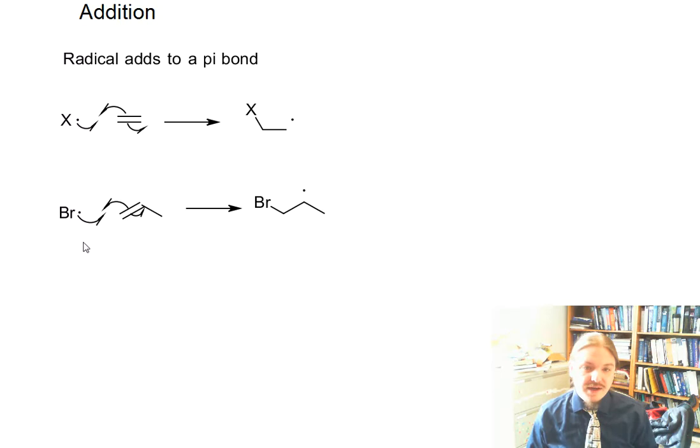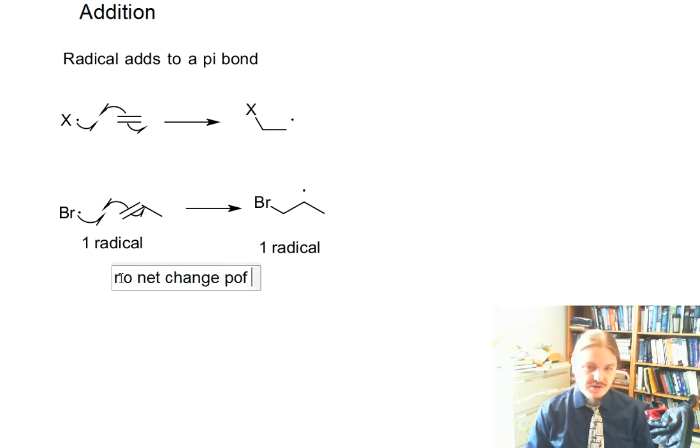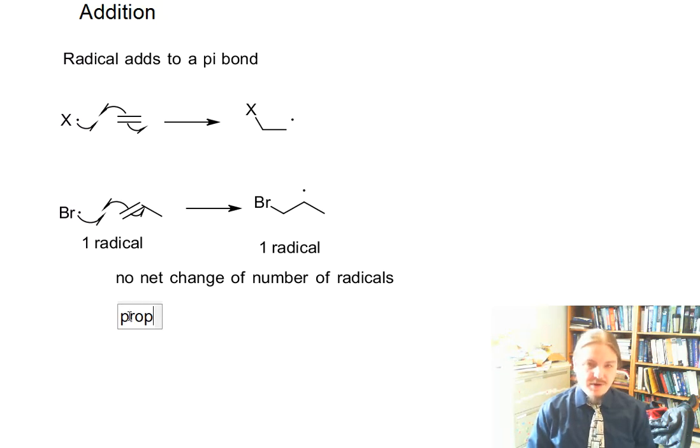And if we count off our radicals, we have one radical on the left and we have one radical on the right. So in the addition step, there's no net change of the number of radicals, which makes this a common propagation step.